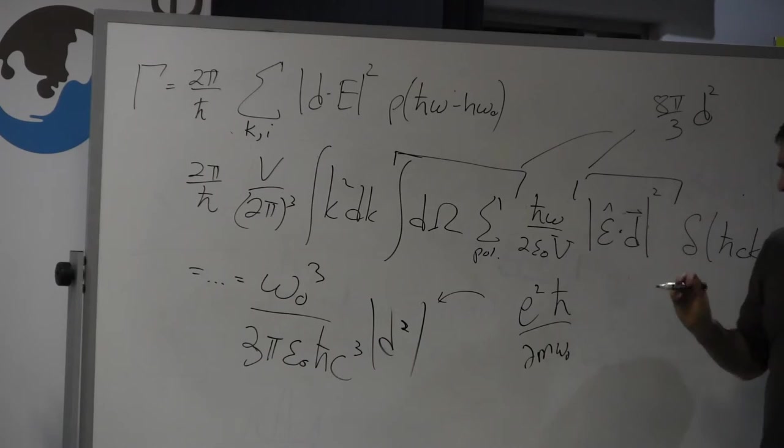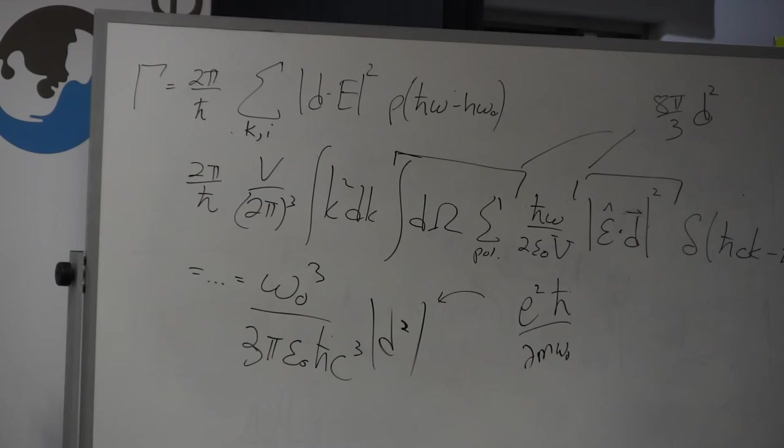I get an expression for the decay rate which doesn't have any h-bars in it, right? Because this h-bar goes away against that h-bar. But that's not surprising because a classical electron on a spring that's radiating a classical electromagnetic energy decays at a certain rate. I didn't need quantum mechanics for any of it. The only piece of quantum mechanics really that came in here was the fact that the atom had a particular structure which is different than an electron on a spring. That's the only vestige of quantum mechanics in this whole calculation.